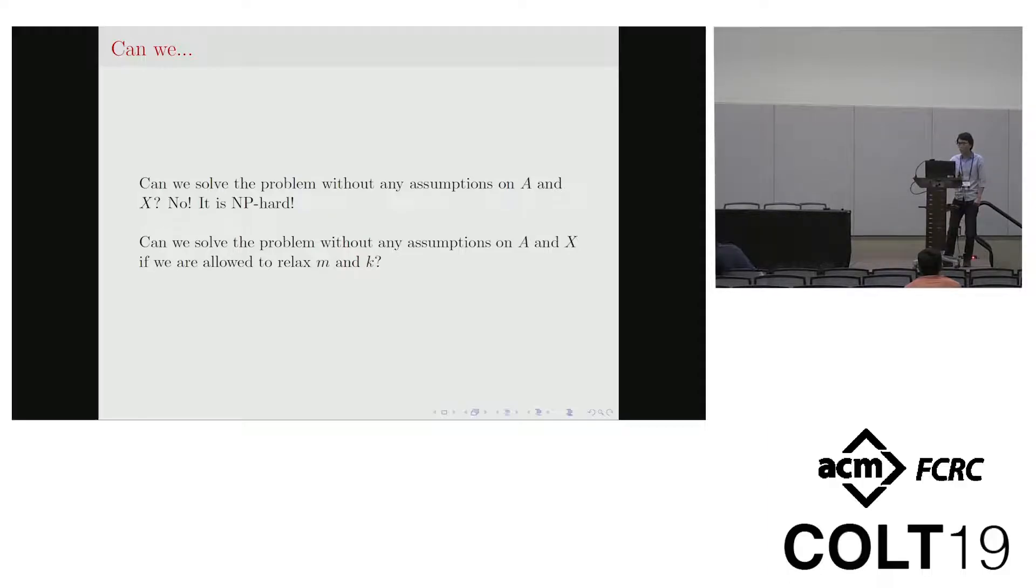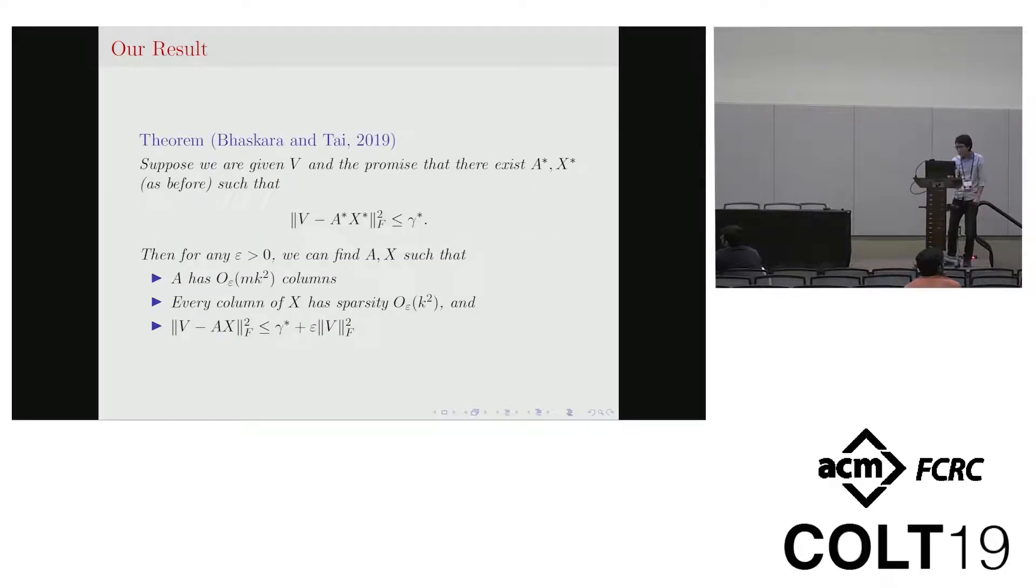And our work is going to explain this question. So here is our main result. Again we have an input matrix V and we would like to decompose it into A and X. And our algorithm returns the matrix A and X such that the number of columns in the matrix A is m times k squared as opposed to m, and we also have the guarantee that each column of X has the sparsity k squared as opposed to k. And of course we also have the guarantee that the error between our input matrix V and our decomposition cannot be too far away from the optimal error.